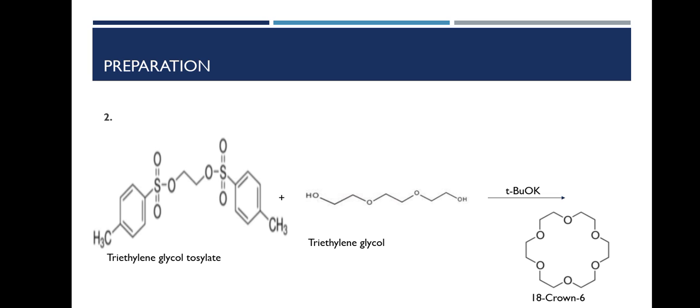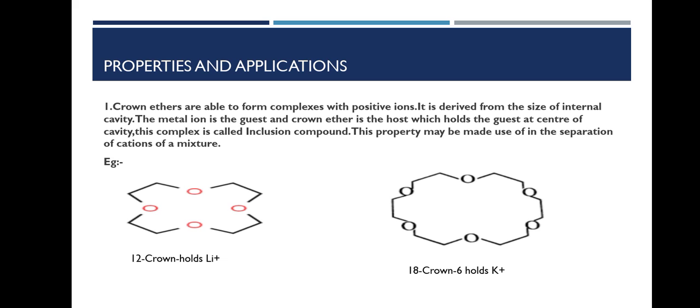Next, we are going to discuss crown ethers' properties and applications. First, the remarkable property of crown ethers is their ability to form complexes with positive ions such as metallic ions and ammonium ions. This unique property derives from the size of their internal cavities. The metal ion is the guest and the crown ether is the host which tightly holds the metal ion at the center of the cavity. This host-guest complex is called an inclusion compound.